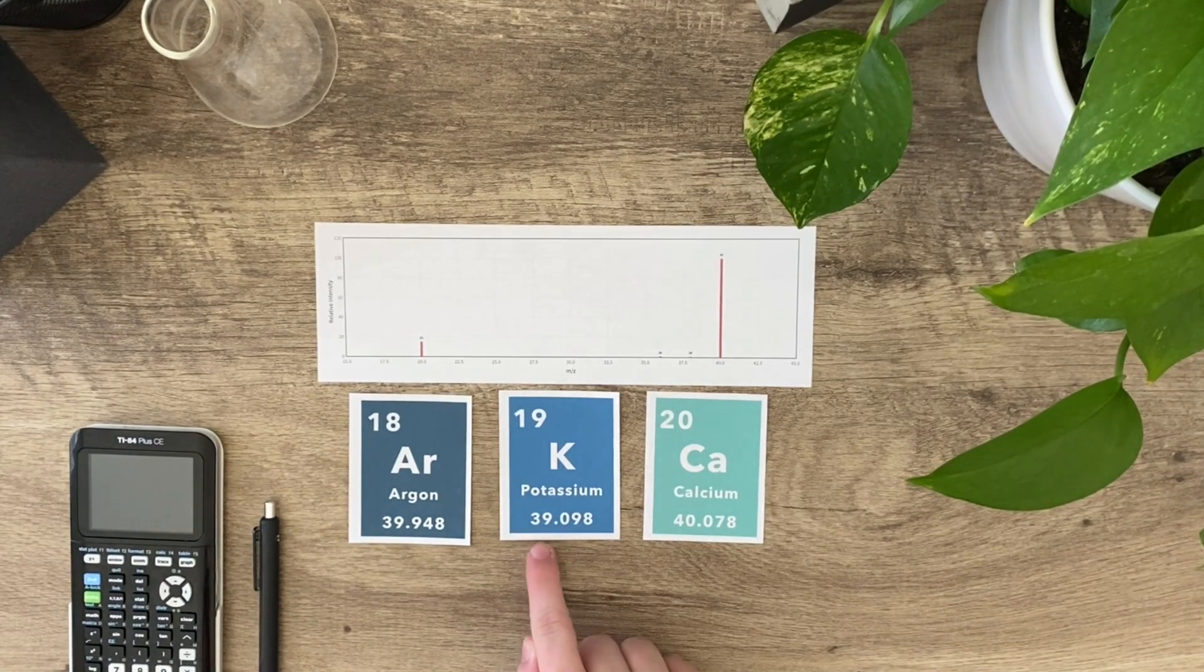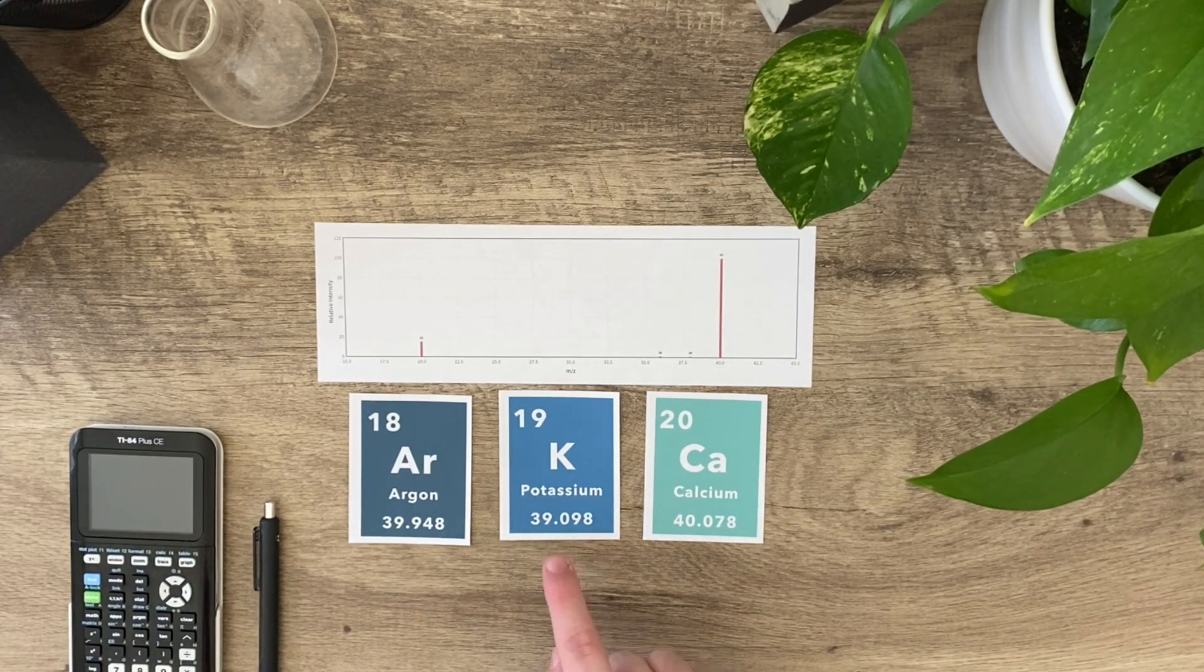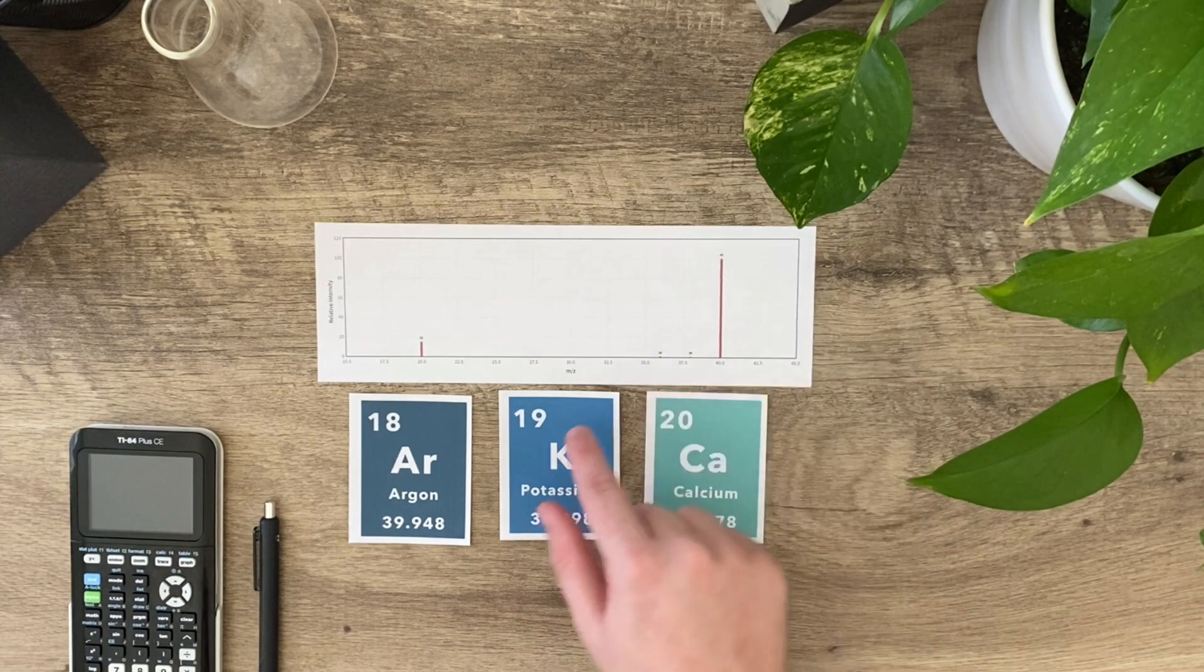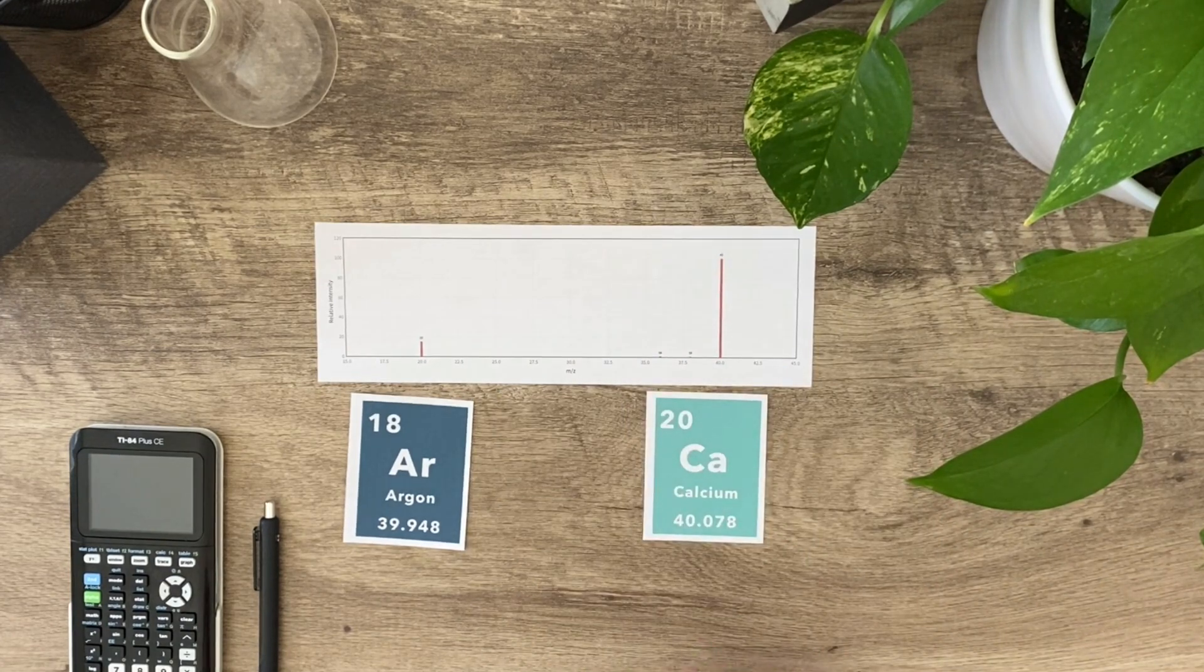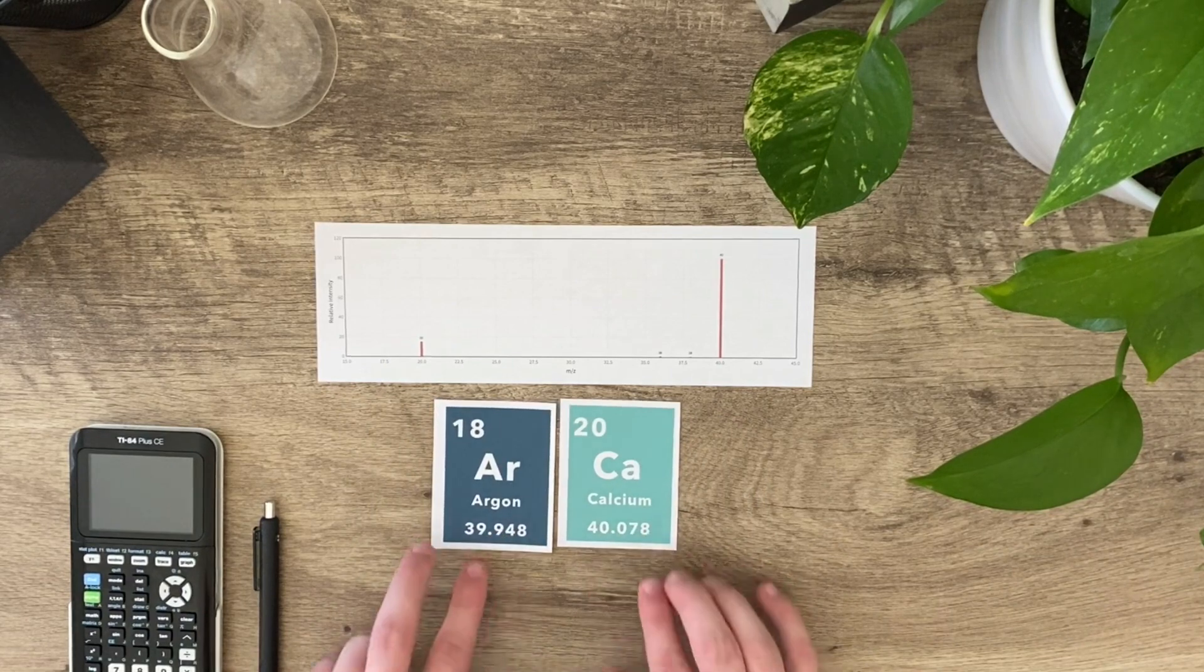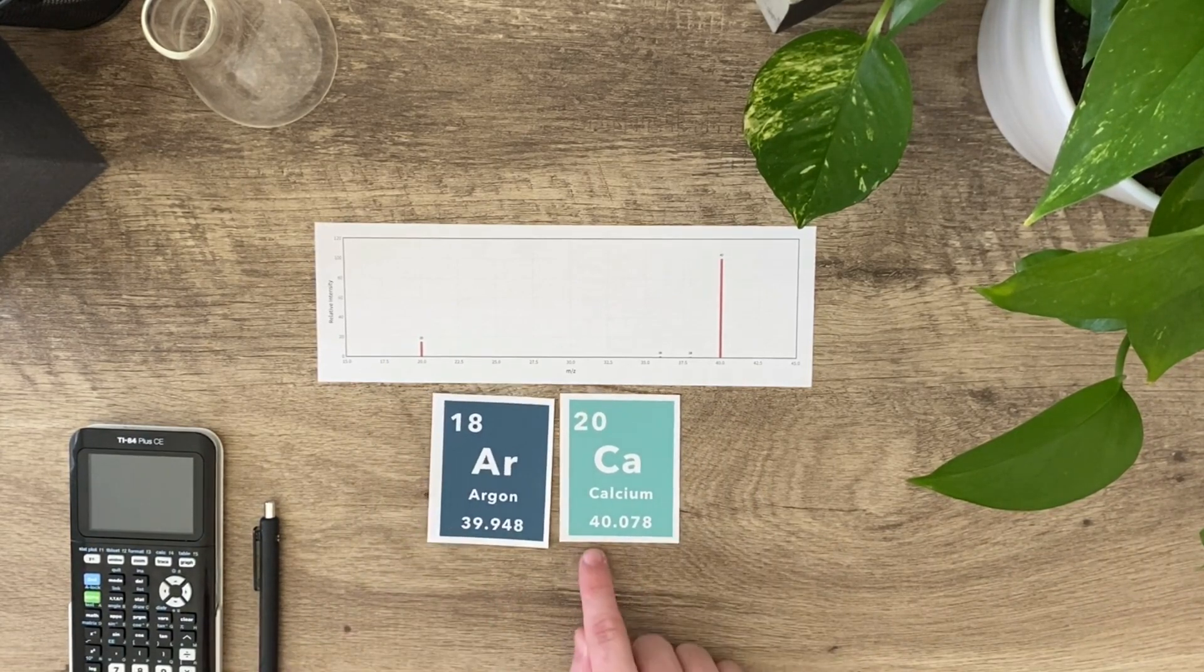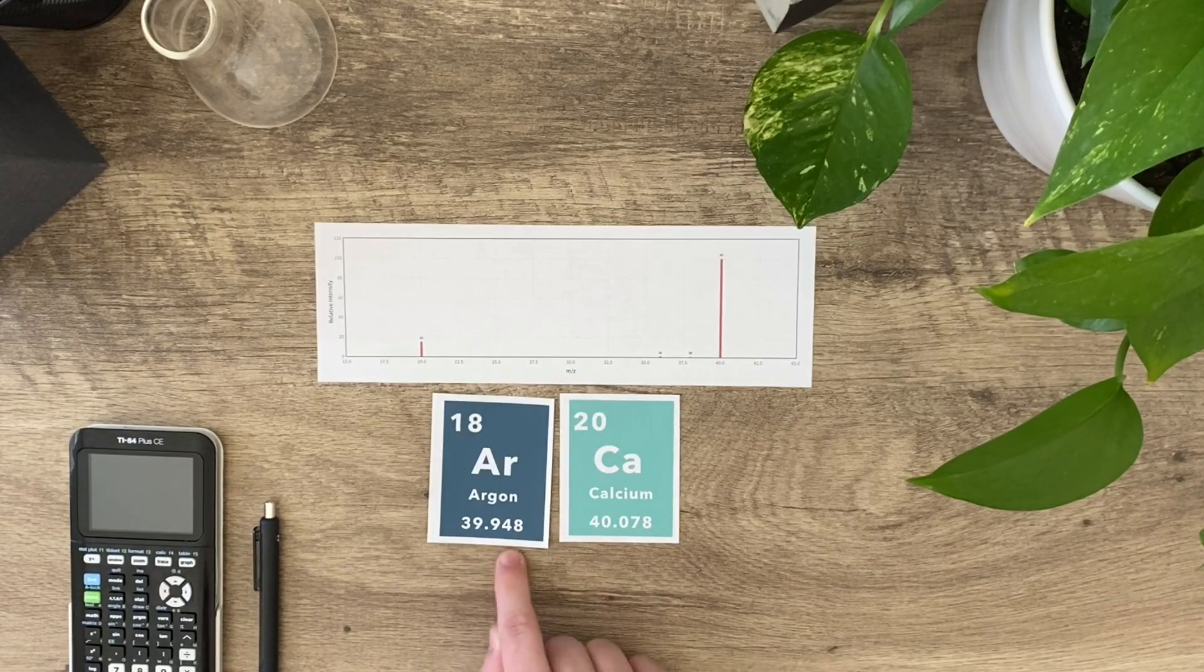The first one we should be able to eliminate really quickly is potassium. Potassium is 39.0, which means I should have a peak at 39, not 40. I have a peak at 40, so potassium is eliminated.